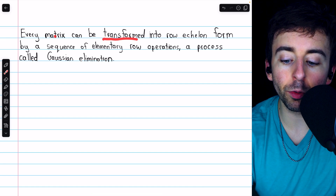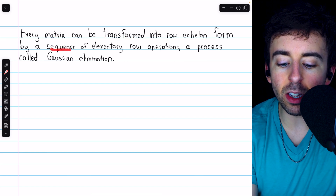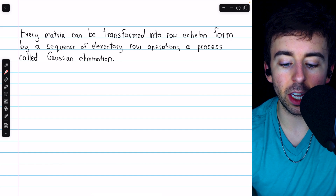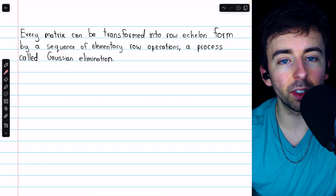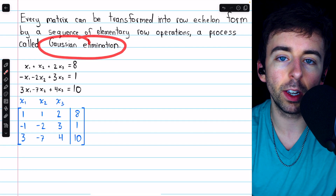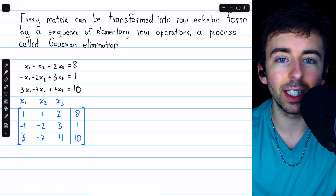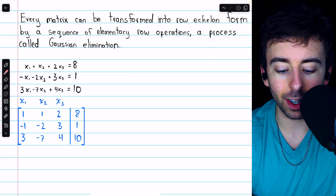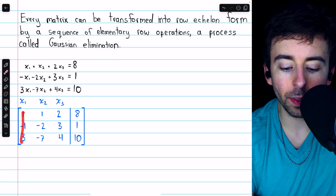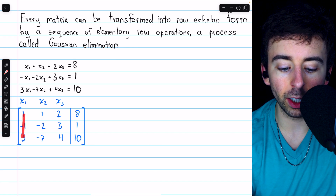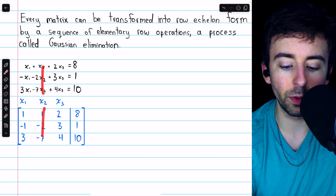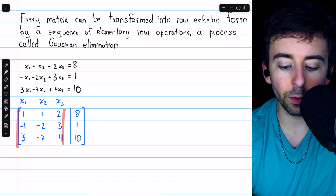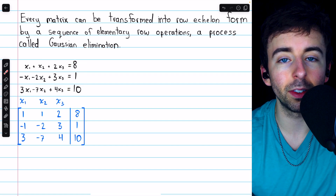Every matrix can be transformed into row echelon form by a sequence of elementary row operations through a process called Gaussian elimination. Typically, Gaussian elimination is done to solve a system of linear equations. Consider a system of linear equations represented as a matrix, where each column stores the coefficients of a particular variable — column 1 has coefficients of x1, column 2 has coefficients of x2, and so on — with a vertical line separating the coefficients from the constants.